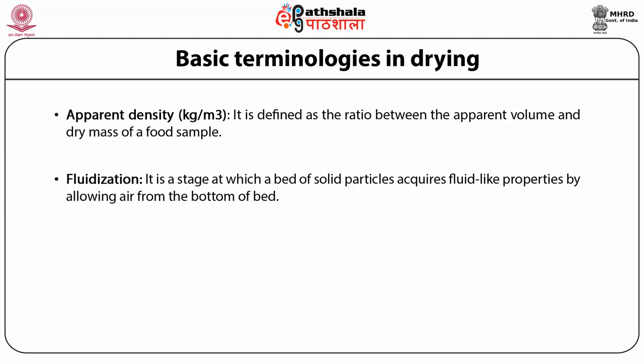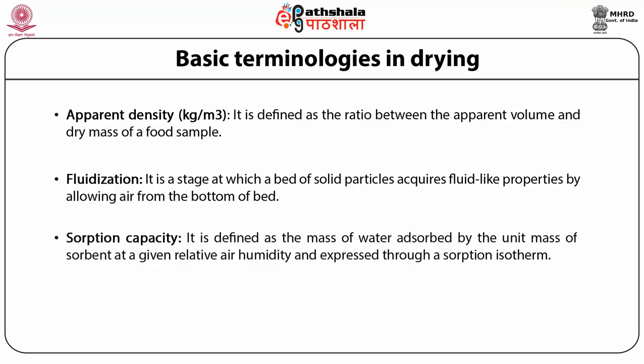Next is absorption capacity, which is defined as the mass of water absorbed by the unit mass of solvent at a given relative humidity, expressed through an absorption isotherm. At equilibrium, the relationship between water content and equilibrium humidity of a material can be displayed graphically by a curve known as moisture sorption isotherm, which indicates the corresponding water content value for each humidity value at a given constant temperature. Sorption capacity is important during convective drying of a product by hot air flow.